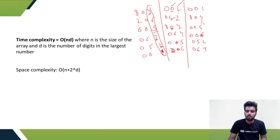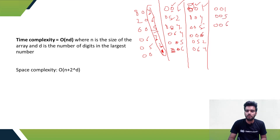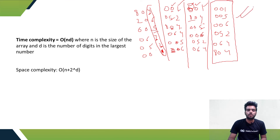After the third iteration, sorting by the hundreds digit: four values start with 0 (001, 005, 006, 052, 064), so we look at their prior ordering — giving 001, 005, 006, 052, 064. Then 8 is the largest, so 804 comes last. The final sorted order is: 001, 005, 006, 052, 064, 804. That's how radix sort works — it sorts digit by digit, examining each radix.